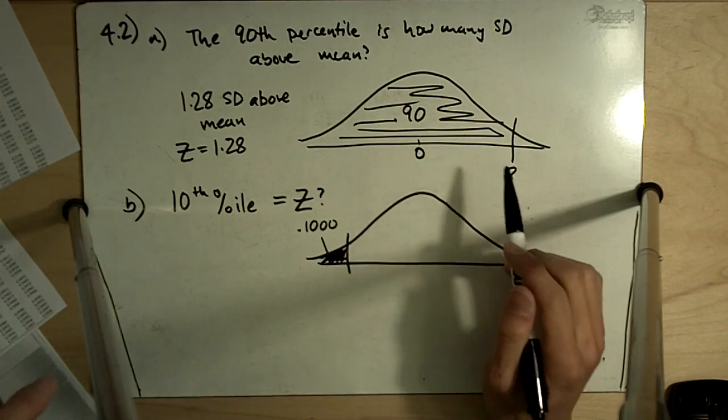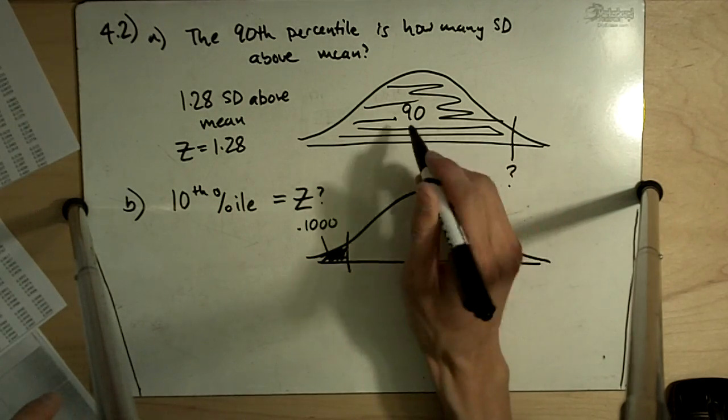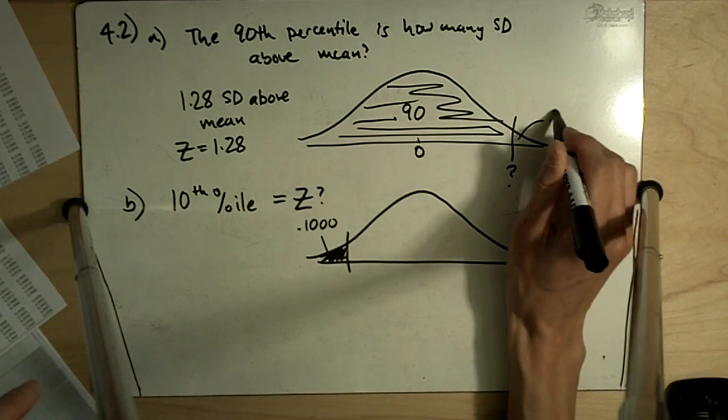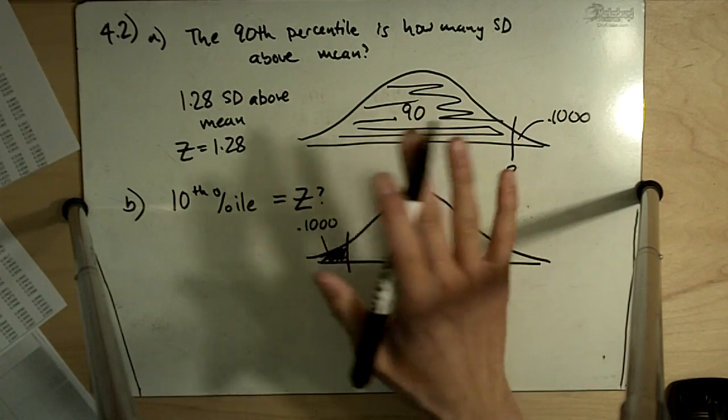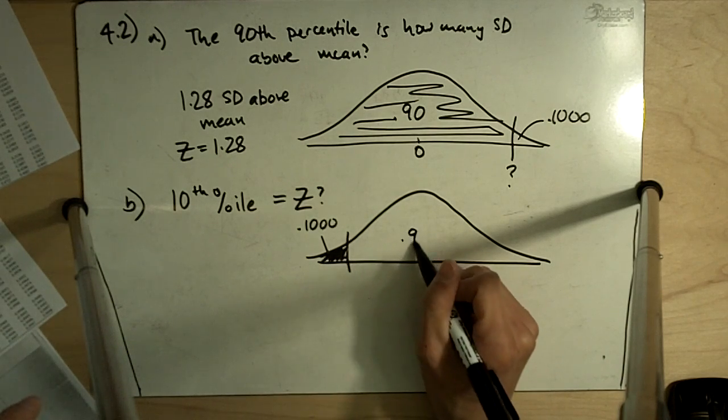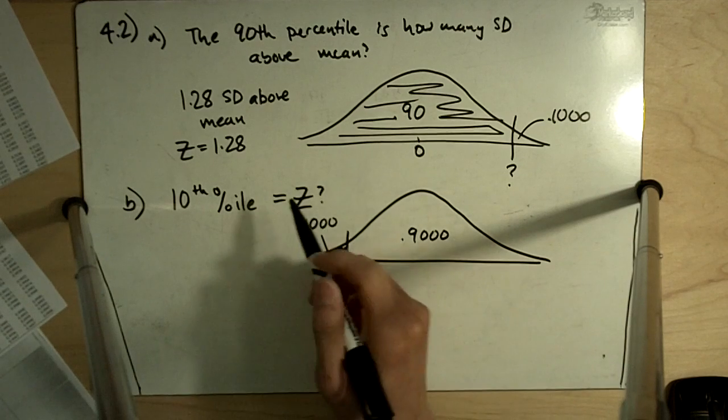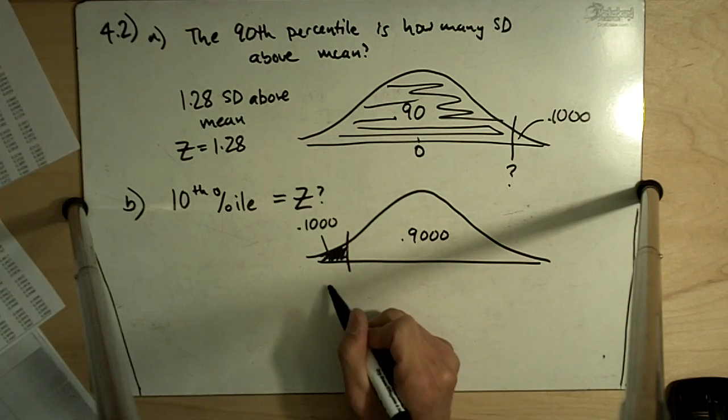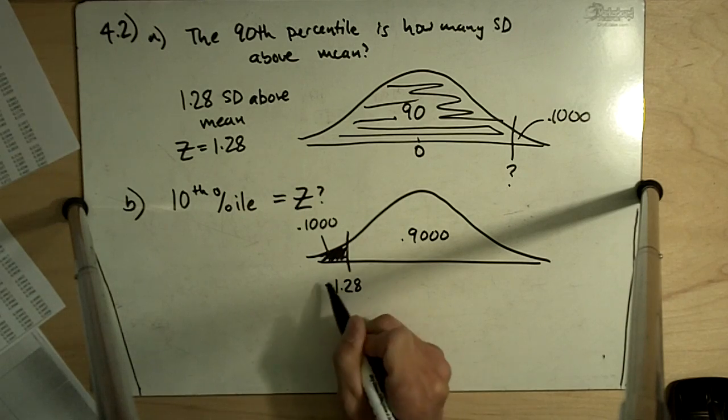Now, I am going to go ahead and tell you a little shortcut. Because we have 90% to the left over here, that means we have 10% over there. And because it is symmetric, if we have 10% over here, we will have 90% over here. Based on the symmetry, our answer is going to be negative 1.28.